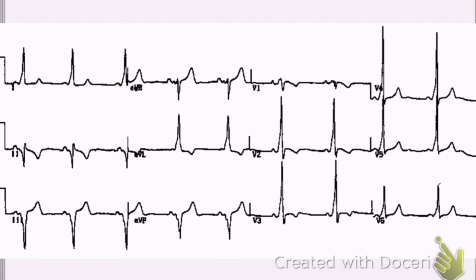I look for WPW by looking for a slurred upstroke in the QRS. I look for a short PR interval, and there is, in fact, short PR intervals and slurred upstrokes. Slurred upstroke, short PR interval. More slurred upstrokes - this is pretty clearly WPW.